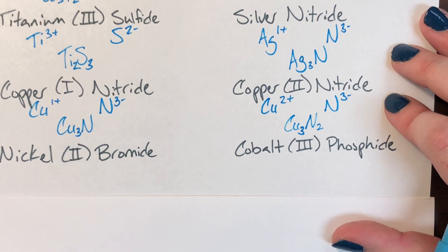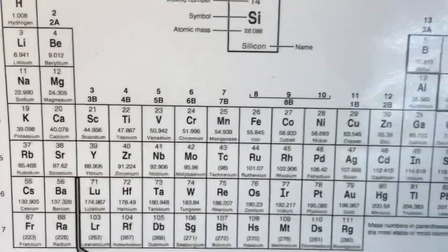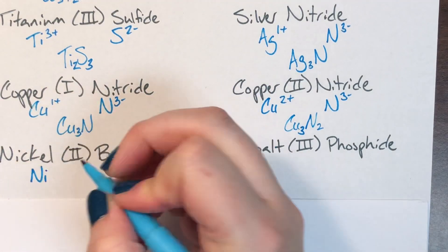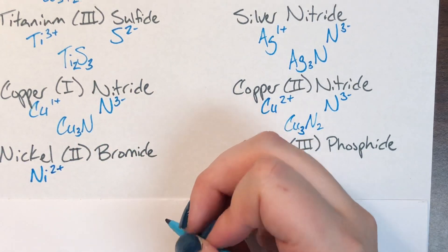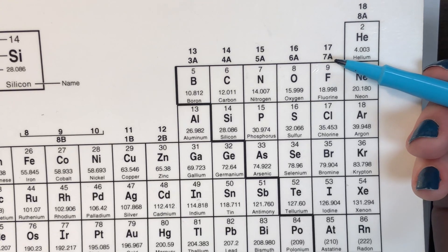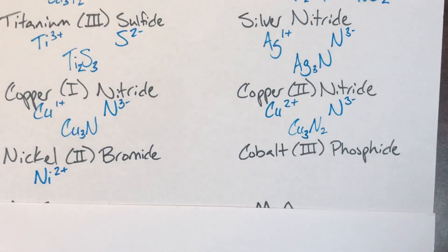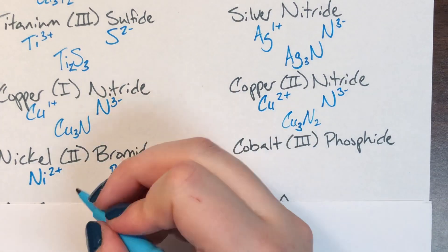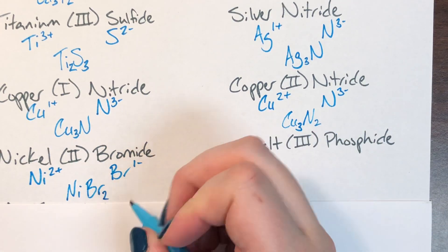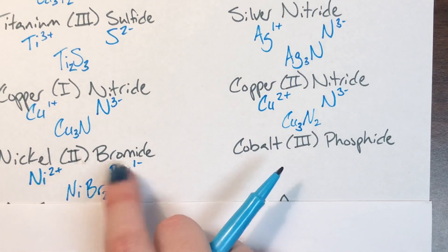Last set of name to formula. Nickel 2 bromide. Nickel is element number 28, symbol Ni. Nickel 2 means I have a charge of plus 2. Bromide is secretly bromine, symbol Br. Bromine is in column 7A, meaning it has 7 valence electrons; it wants 8, so it steals 1. Stealing is bad, so bromine is Br with a negative 1 charge. Switching charges for subscripts: nickel's 2 becomes bromine's subscript of 2, and bromine's 1 becomes nickel's subscript of 1 — no need to write it. So NiBr₂ is my correct formula.